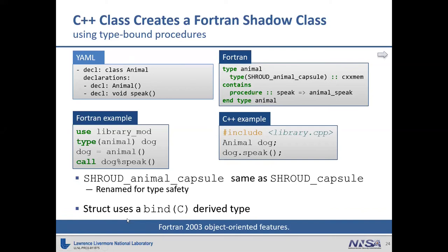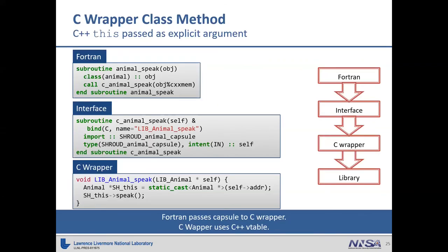In C++, classes and structs are essentially the same thing — they just change how you view the members as either public or private. Shroud treats a struct more as a C struct and creates a derived type with bind(C). So if you have a struct with X, Y, Z in it, you can have an array of 10,000 of them and it'll be contiguous memory. When calling a C++ method, the Fortran wrapper extracts the capsule, passes it through the interface into the C wrapper, which then pulls out the address of the C++ object, casts it correctly, and uses C++ to call it — letting C++ deal with the vtable.